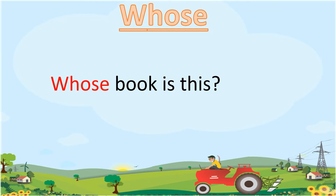Our second sight word is 'whose'. W-H-O-S-E. 'Whose'. Whose book is this? And in this sentence, the sight word is 'whose'. Jiska matlab hota hai kiska ya kiski.